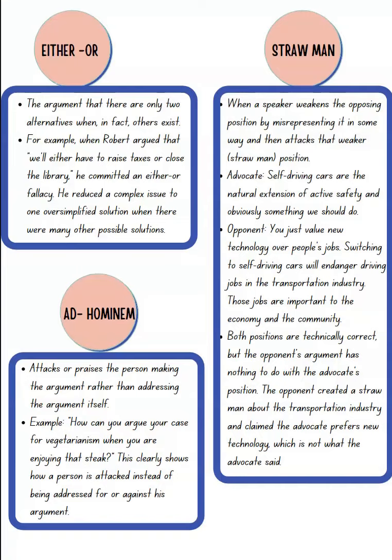Straw man is when you weaken the opposing position by misrepresenting it and attacking the weaker version instead. For example, an advocate says self-driving cars are a natural extension of active safety. The opponent then attacks a misrepresented position, saying switching to self-driving cars will endanger jobs in transportation — attacking the weaker side rather than the main argument the advocate is making.